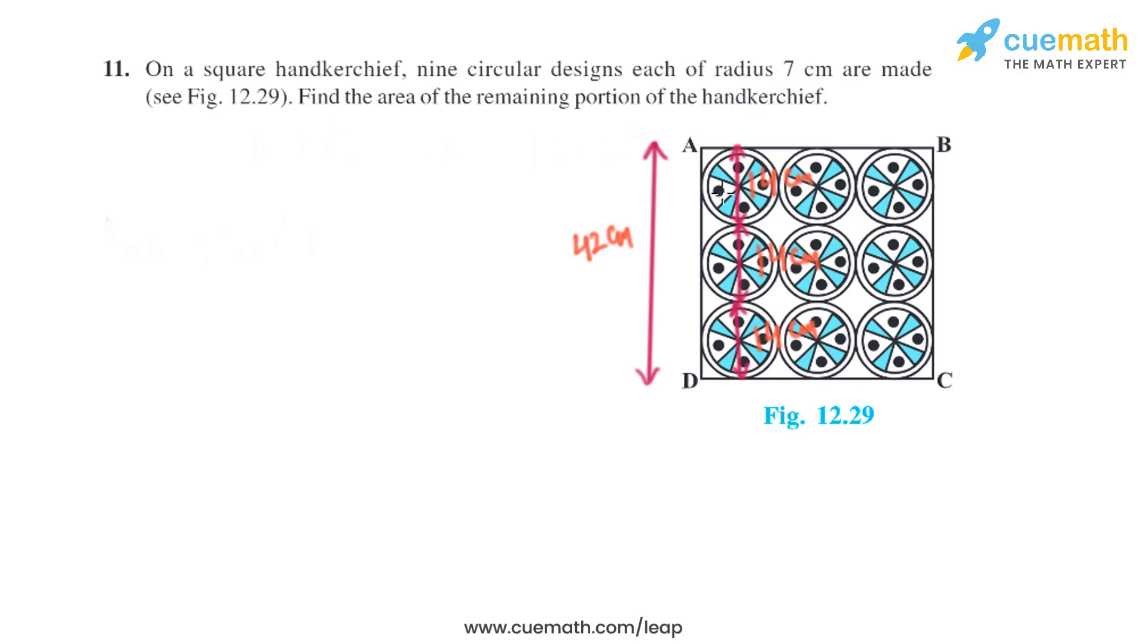The diameter will be 14 centimeters. One side of the square is basically the sum of three diameters, so it will be 14 plus 14 plus 14, which is the same as 42 centimeters.